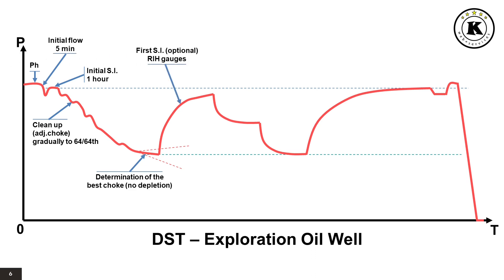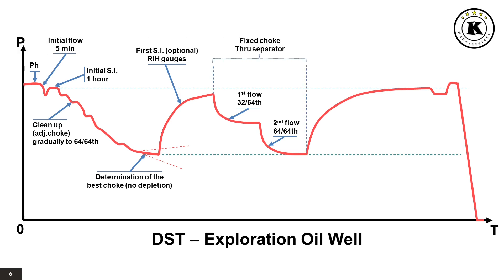Closed the well for a first shut-in period. It is optional to run and hold downhole gauges or surface readout. Opened the well for a first flowing period on 32 over 64th fixed choke. Increased the choke size for a second flowing period on 64 over 64th fixed choke. This is called the main flowing period or drawdown, through the test separator, on several fixed choke sizes.